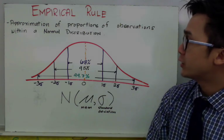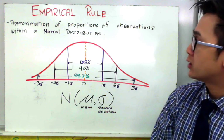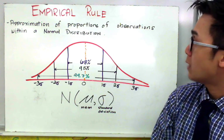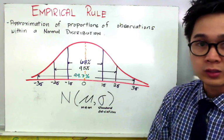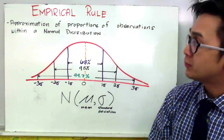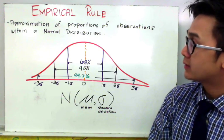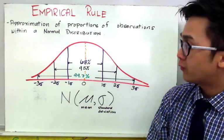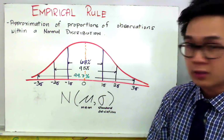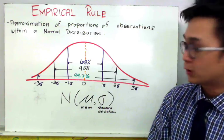The empirical rule, by definition, is an approximation of proportions of observations within a normal distribution. This particular rule in statistics will only apply for distributions that are bell-shaped curves.